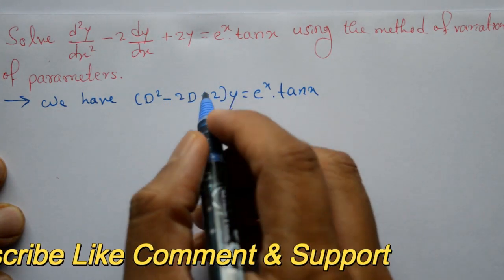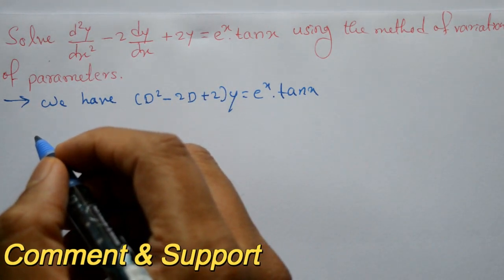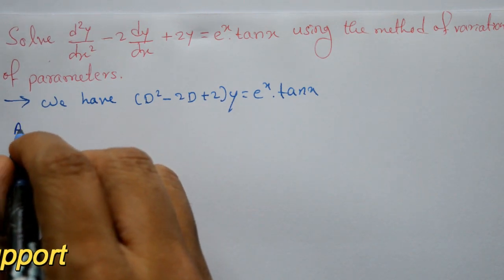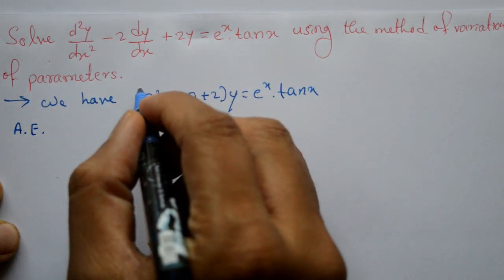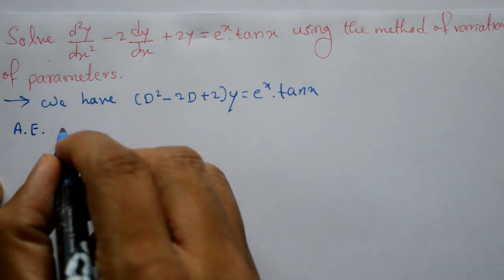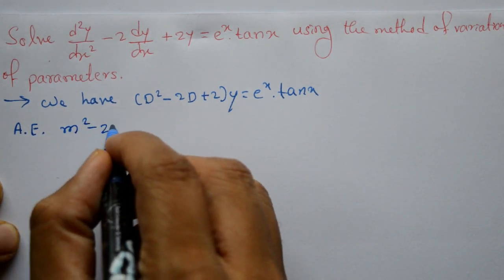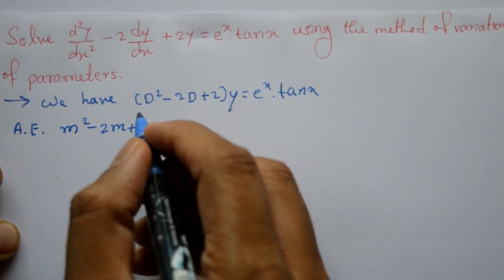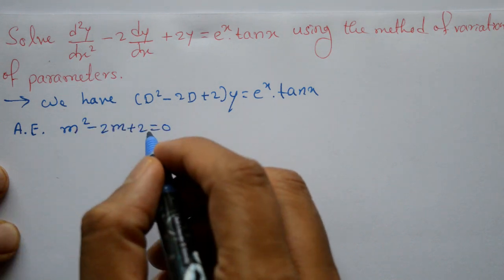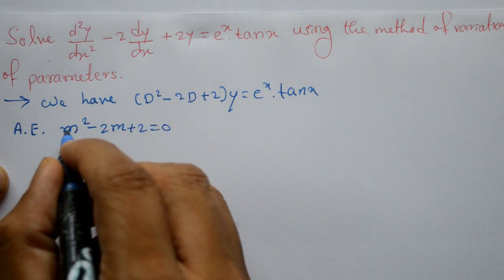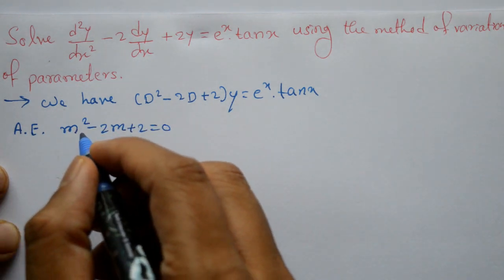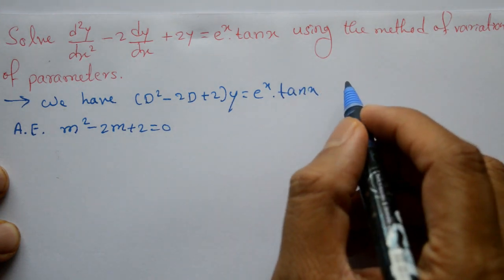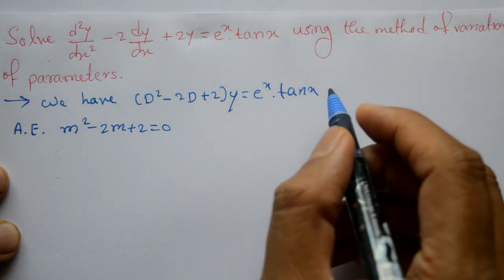After finding the roots, we will write the complementary function. The auxiliary equation is m² minus 2m plus 2 equals 0. This is a quadratic equation of the form ax² plus bx plus c equals 0, and x equals minus b plus or minus square root of (b² minus 4ac) divided by 2a.